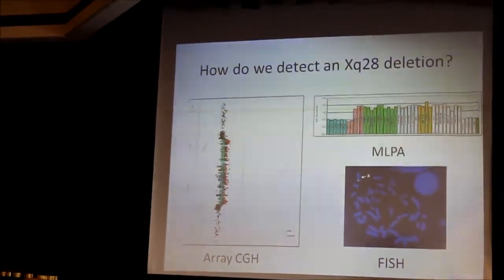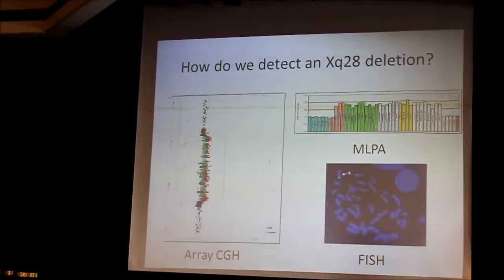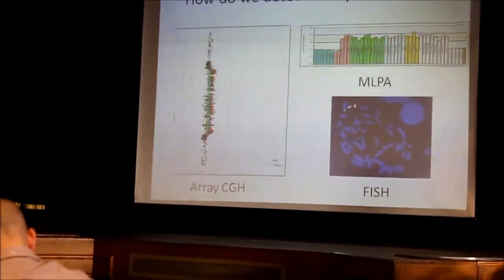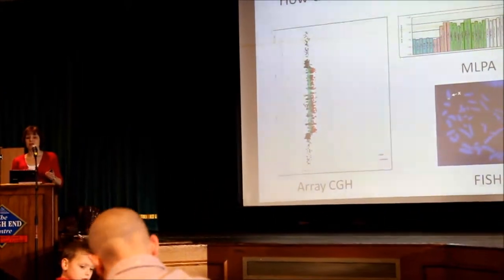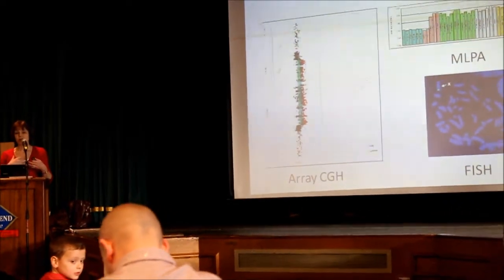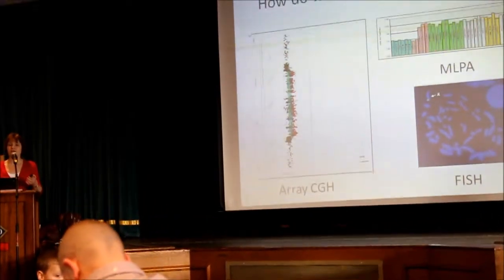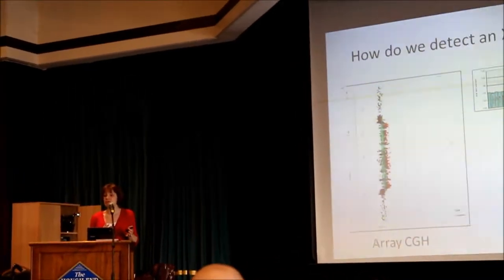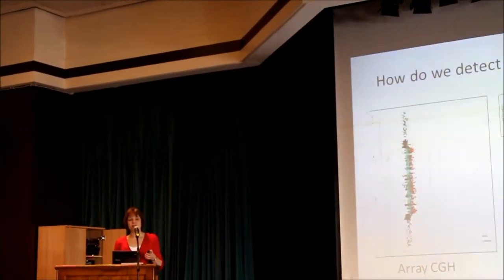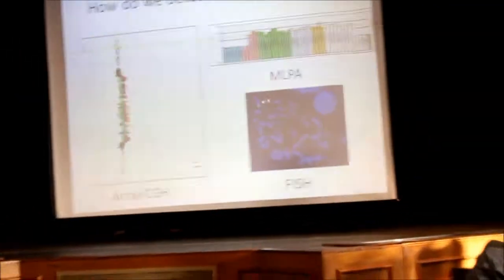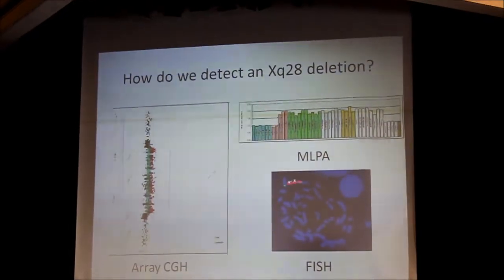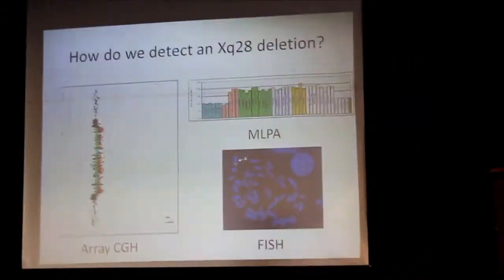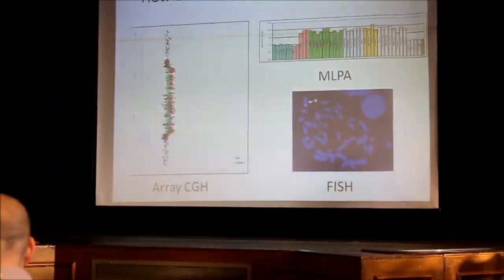Many people with this condition — mostly boys — will have had routine genetic tests reported as normal, because it was impossible to see that difference in the chromosomes. But over the last few years, we've got lots of different techniques to look at chromosomes in more detail, and that's why there's been an increase in the number of boys — and some girls — diagnosed with an XQ28 duplication. One technique is to light up the end of the X chromosome so you get fluorescent dots and can see if there's extra X chromosome material.